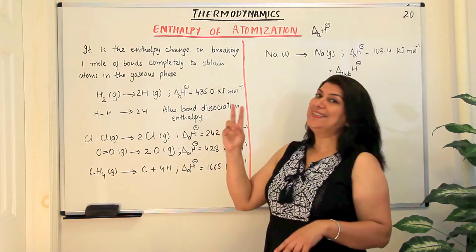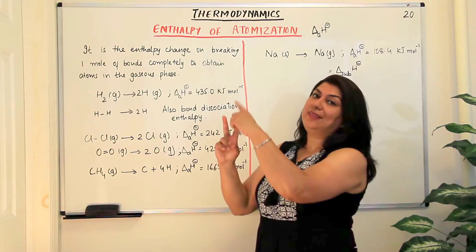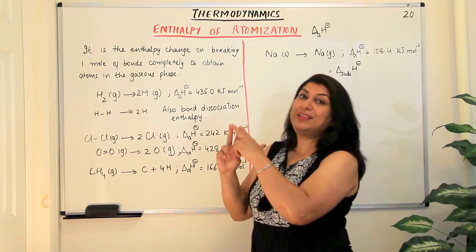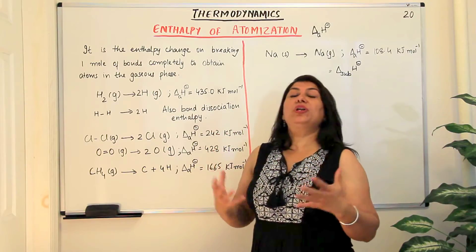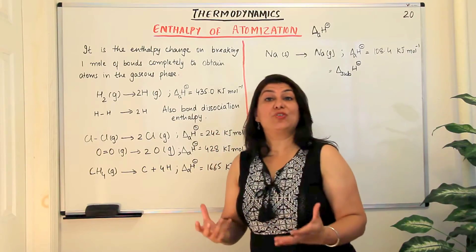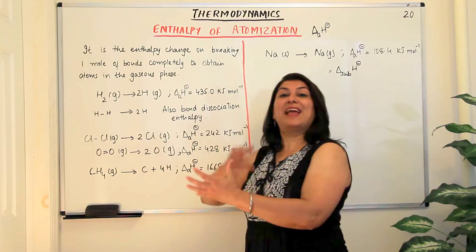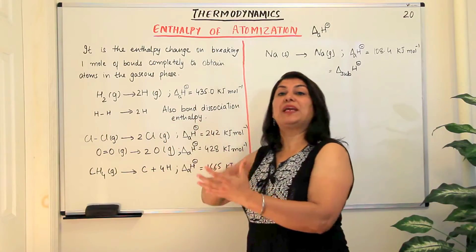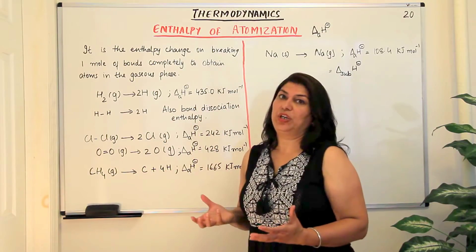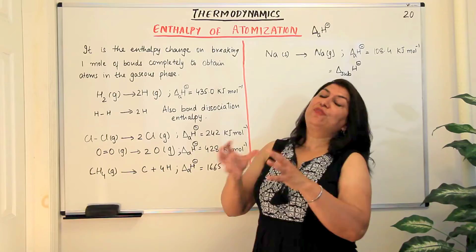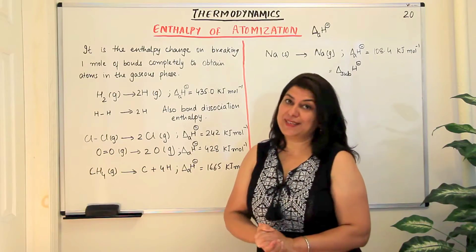If the molecule is diatomic then you're just breaking the bond between the two atoms, but if the molecule is polyatomic then the sum of the enthalpies of the breaking of all the bonds in that molecule gives you the enthalpy of atomization.